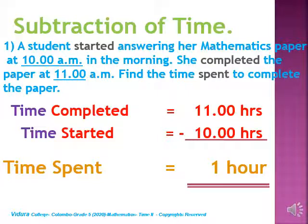As we are subtracting, you need to write the bigger number first — that means the time completed. She completed the paper at 11 a.m., so let's write our first statement: time completed 11 hours. She started at 10 a.m., so time started 10 hours. Then the time duration, or time spent, is 1 hour. 11 minus 10 equals 1 hour.